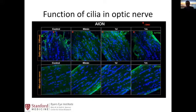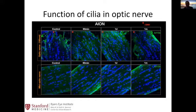One day after inducing AION, there is a buildup of cells with cilia near the optic nerve head. This may suggest that cilia have a function in regeneration. Why loss of this particular protein and structure may be related to optic disc drusen is still under investigation.